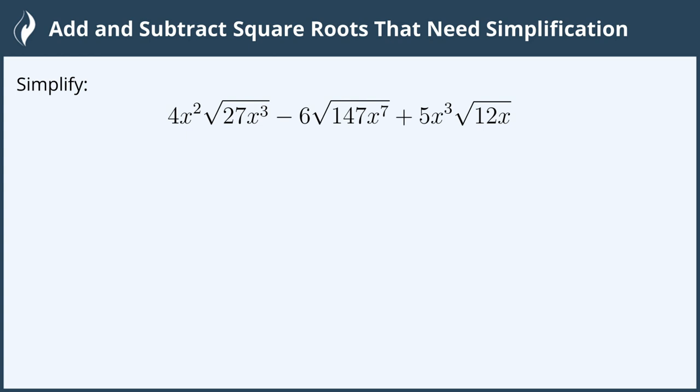Let's go ahead and simplify each of these radicals by finding perfect squares inside of them. 27 can be rewritten as 9 times 3 and 9 is a perfect square.